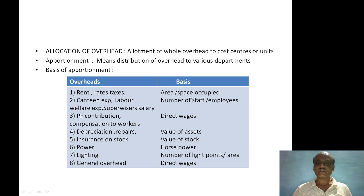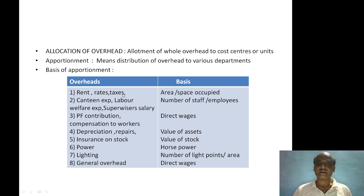For rent, rates and taxes, the basis of apportionment is the area or space occupied by each department. This is a primary distribution basis for these items.